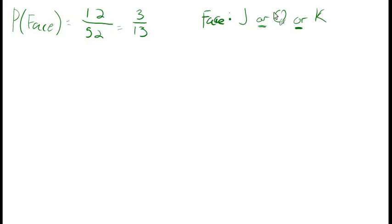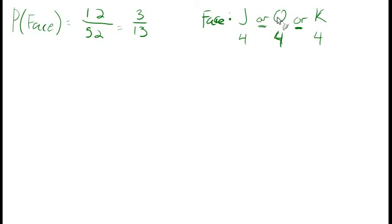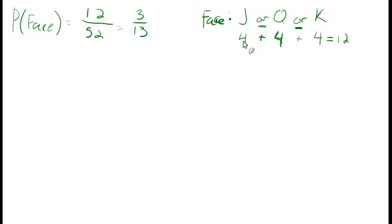To get a face card, any of these will do: jack, or queen, or king. So you just think, I'll take however many jacks there are, how many queens there are, and how many kings there are, and add it all together. There are four jacks, four queens, and four kings. Since any of them will do, I have four ways to be successful, and another four, and another four. We knew that jack, or queen, or king is what face card means, and we just added them all together.